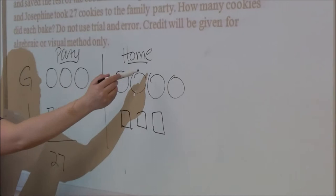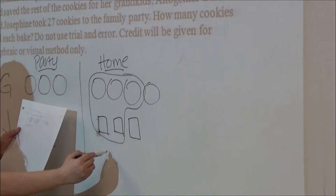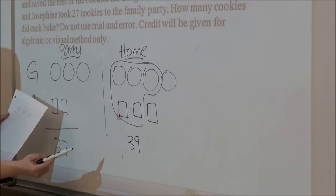27 is three circles and two squares, so we know that this is also 27. But we know that there was 39 cookies left at home, because 66 minus 27 is 39.